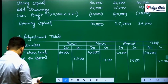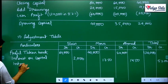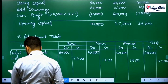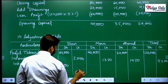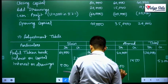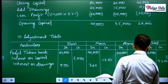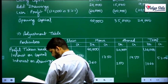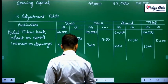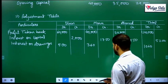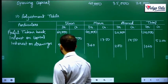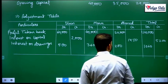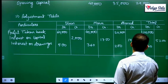Next is interest on drawings we have to take from them. They have already given us the amounts as 500, 360, and 200. The total is 1,060. Interest on drawings will reduce their capitals. That is only two things.